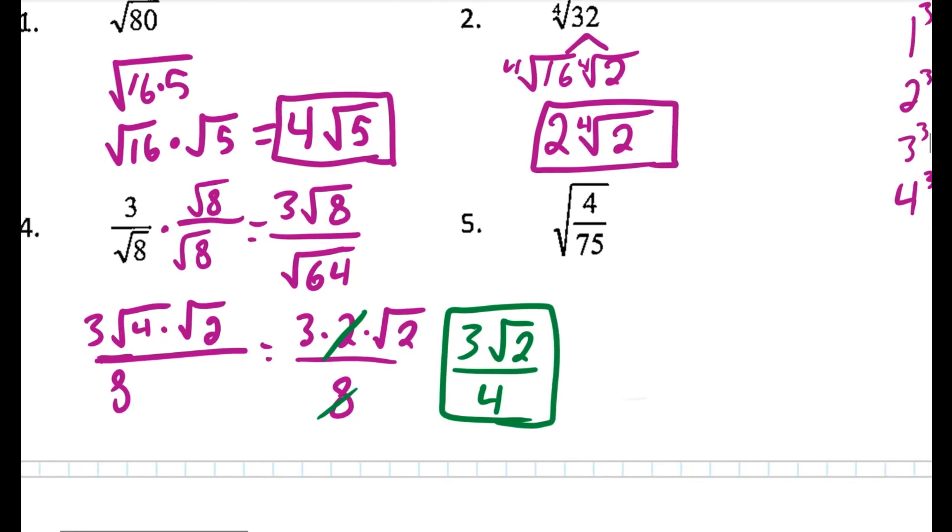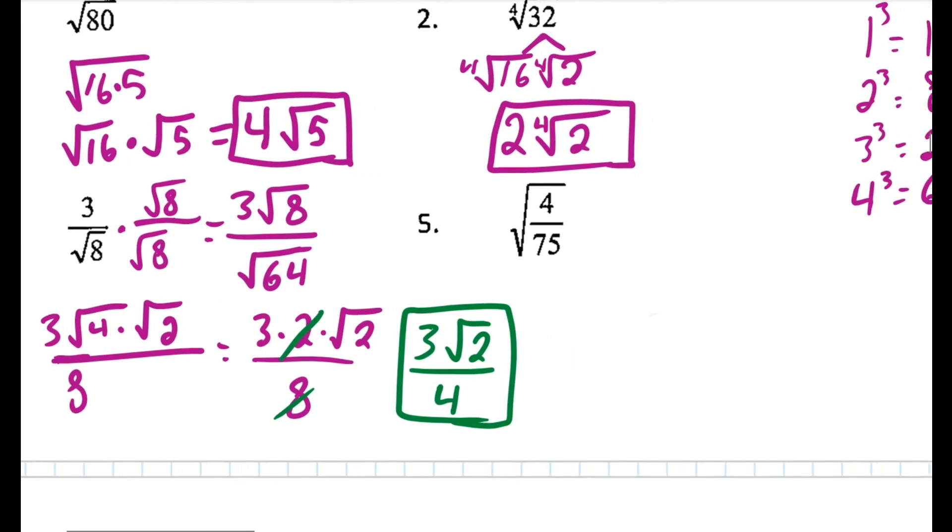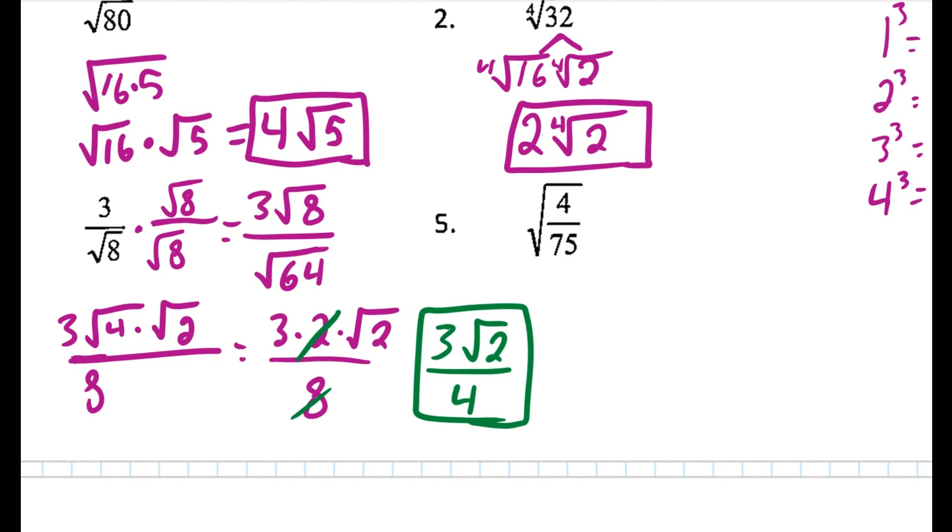Let's look at the next one. The next one actually doesn't have a square root in the denominator. The whole thing is a square root. So the first thing we're going to do is we're going to take the square root of the top and the square root of the bottom. So that's going to be the square root of 4 over the square root of 75. The square root of 4 is just 2, but the square root of 75, that's like the square root of 25 times the square root of 3. Or we could just say that's 2 over 5 square root of 3.